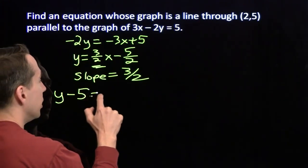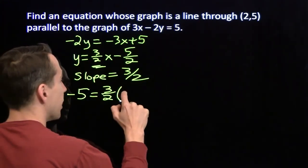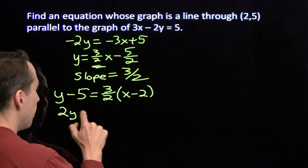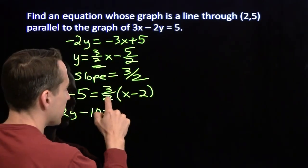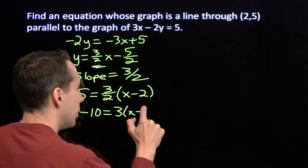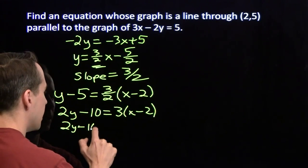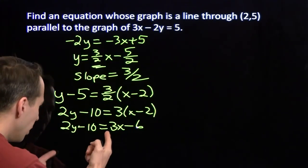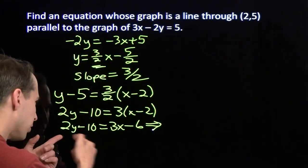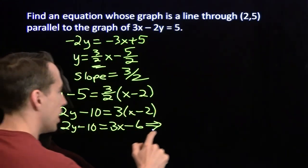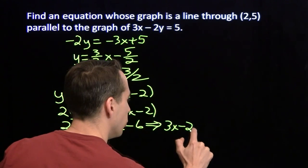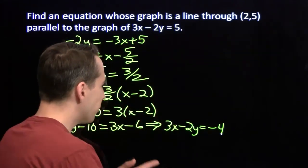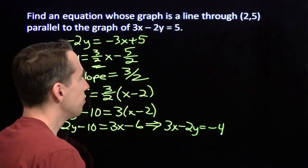y minus 5 equals the slope times the difference in the x-coordinates: three-halves times (x minus 2). Multiply both sides by 2: 2y minus 10 equals 3 times (x minus 2). Expand the right-hand side: 2y minus 10 equals 3x minus 6. Subtract 2y from both sides and add 6 to both sides: 3x minus 2y equals negative 4. Quick test — does it go through (2, 5)? Putting in 2 and 5: 6 minus 10 is negative 4. That's great.